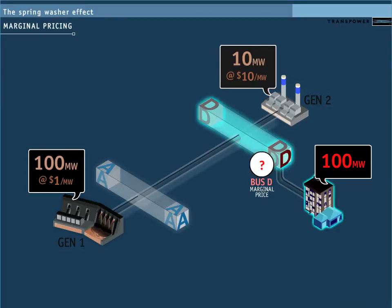Remember, the marginal price at a bus is the cost of supplying the next megawatt of load to that bus.